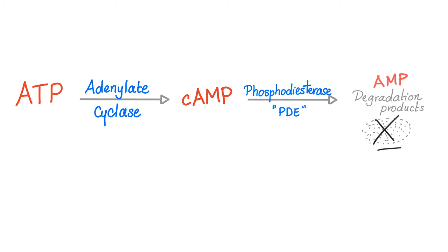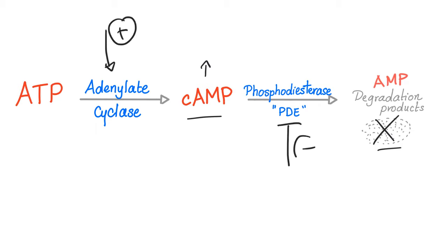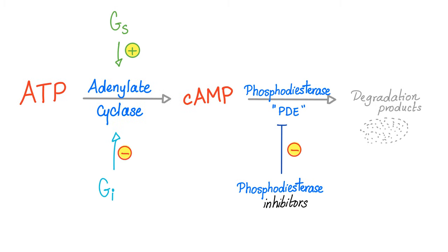How can we increase cyclic AMP? It's easy. You either stimulate adenylate cyclase, or you inhibit phosphodiesterase. Who's going to stimulate adenylate cyclase? A Gs-coupled receptor — S for stimulation. There's also Gi for inhibition, but that's not today's topic. So you either stimulate adenylate cyclase or inhibit phosphodiesterase.